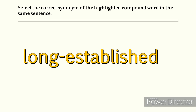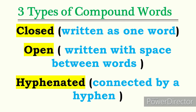Another additional topic we have here is the three types of compound words. Compound words can be closed, open, or hyphenated. A closed compound word is written as one word. An open compound word is written with a space between words. A hyphenated compound word is connected by a hyphen.